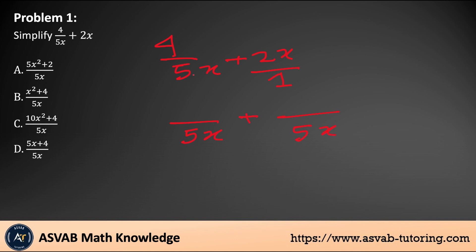How many times does 5x go into 5x? One time — so multiply 1 top and bottom, giving you 4. Then 1 goes into 5x is 5x times, so multiply 2x times 5x, giving you 10x squared. So the result is 4 plus 10x squared over 5x. That is the correct answer — letter C.